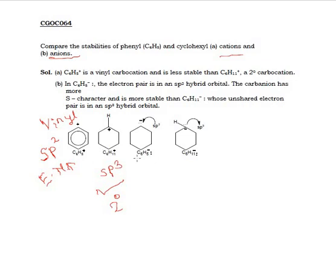If we talk about the anion, then it will be the opposite. There is a negative charge on benzene here — the phenyl anion. Now this is sp2 hybridized, so the percent s character will increase, and therefore the electronegativity will increase.